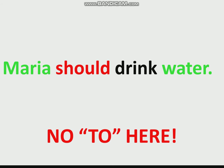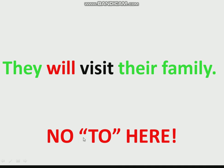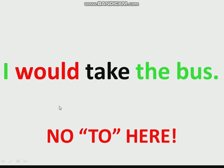'Maria should drink water' — 'should' is a modal verb, 'drink' is a normal verb, so no 'to' here. Should drink. 'They will visit their family' — 'will' is a modal verb, 'visit' is a normal verb, so no 'to' here. 'I would take the bus' — 'would' is a modal verb, 'take' is a normal verb, so no 'to' here. Would take.